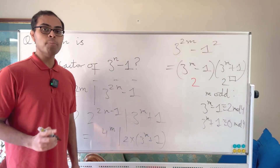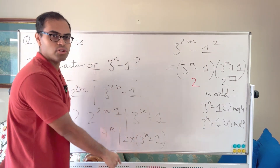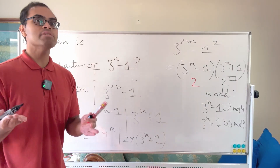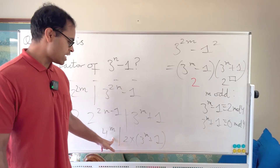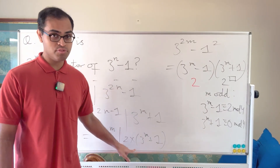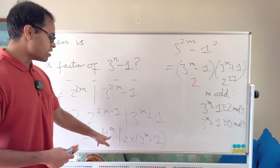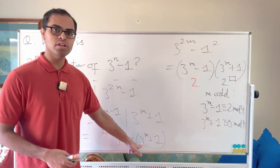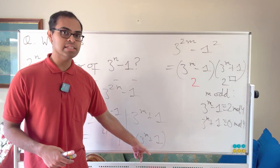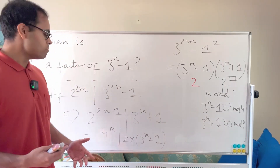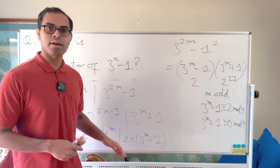This is very interesting because 4^m grows much faster than 3^m, so it won't be possible for this to hold unless m is very small. When m = 1, the left side is 4 and the right side is 2·(3+1) = 8, so it works. When m = 3, 4^3 = 64 but 2·(27+1) = 56, which is smaller — so it fails.